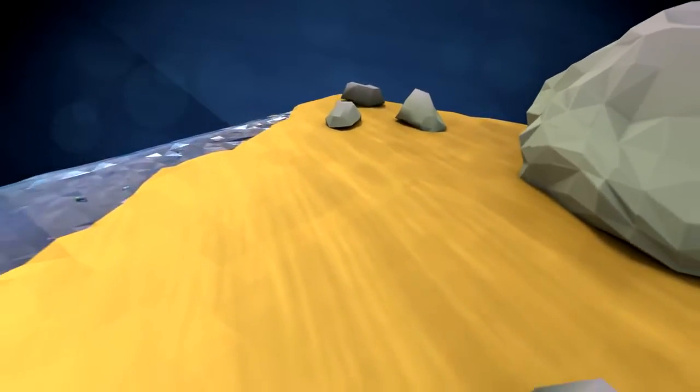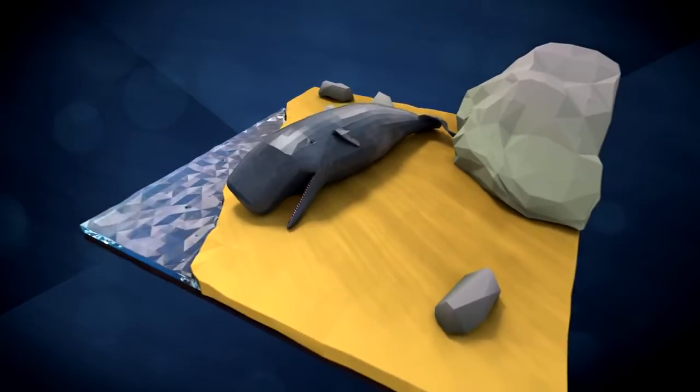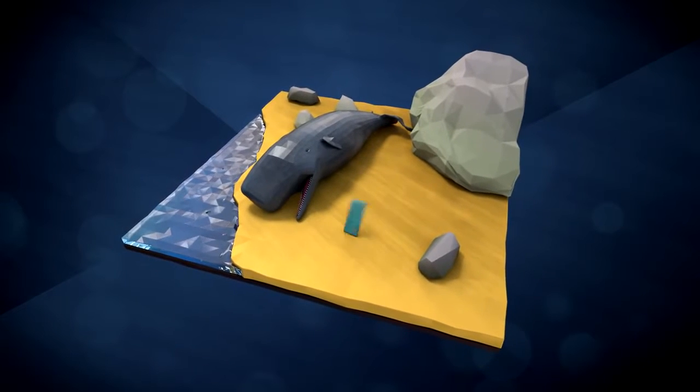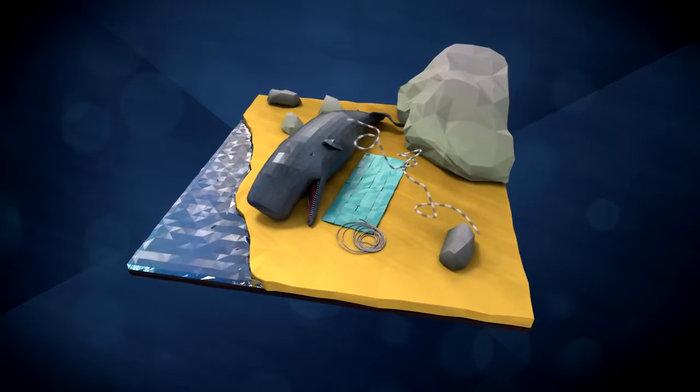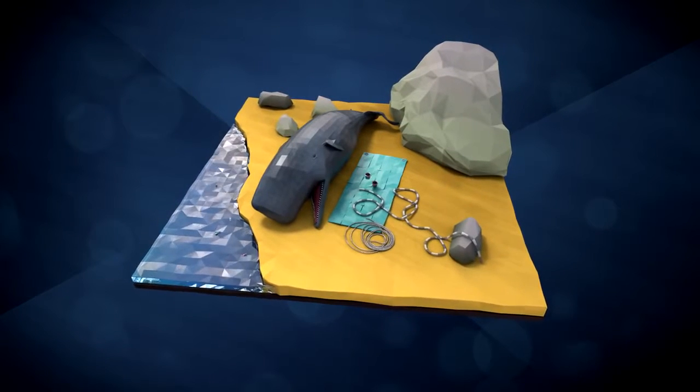When researchers examined the stomach of a beached sperm whale in 2012, they found 30 square meters of tarpaulin, a 4.5-meter-long hose, a 9-meter-long plastic rope, and two flowerpots.